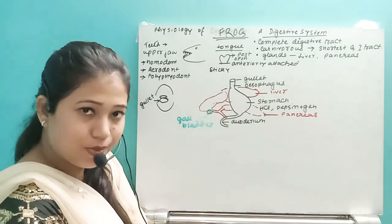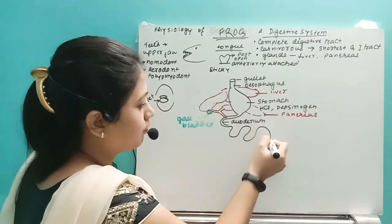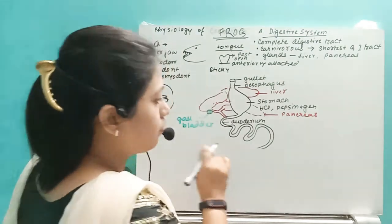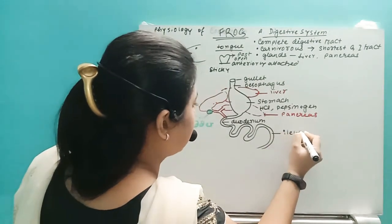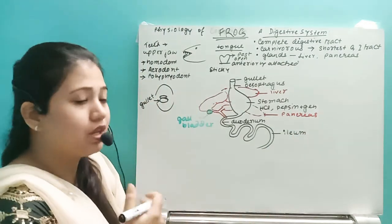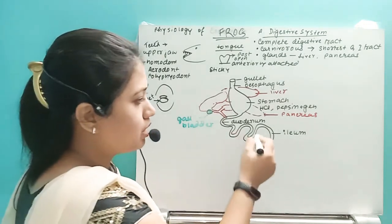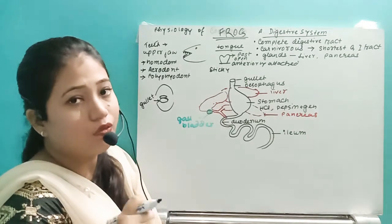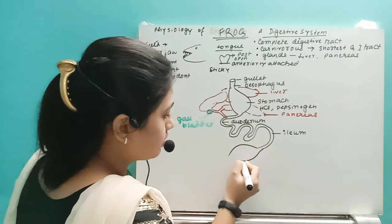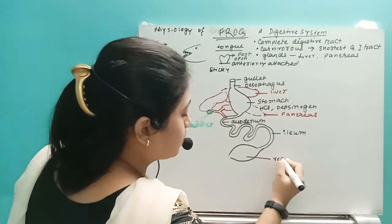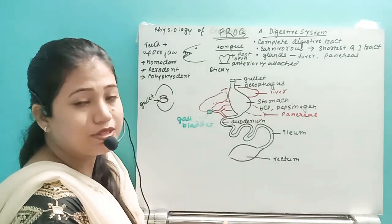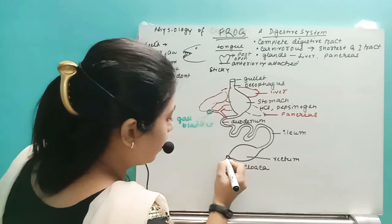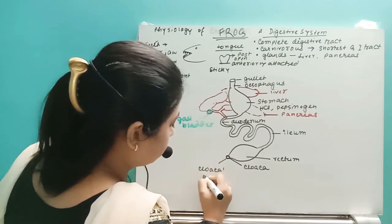The duodenum is the first part of the small intestine. After that comes the coiled ileum, which is the region where digested food is absorbed. After the small intestine comes the large intestine, which has only one part — the rectum. The rectum represents the large intestine and opens into the cloaca.